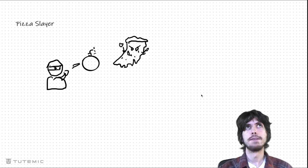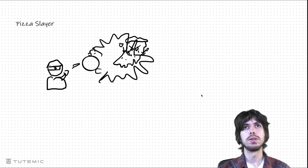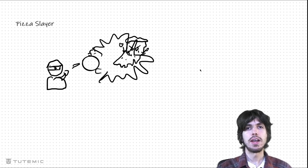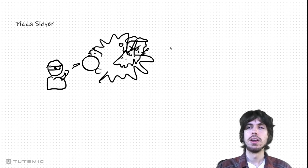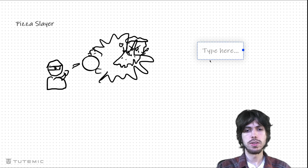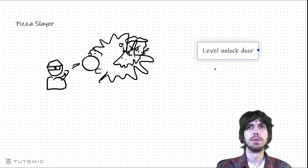Let's say there's a particular situation: the bomb hits the pizza and the pizza goes kaboom. The pizza explodes and it's really fun. But as you add complexity to your project, let's say that a bunch of other things happen when the pizza gets slain. So let's write them all out. What kinds of things could potentially happen? Maybe when a pizza gets slain, the level needs to know to unlock a door — unlock a door when a certain number of them have been killed.